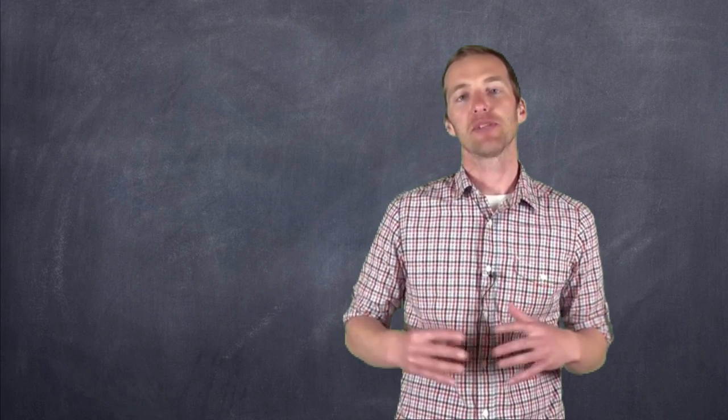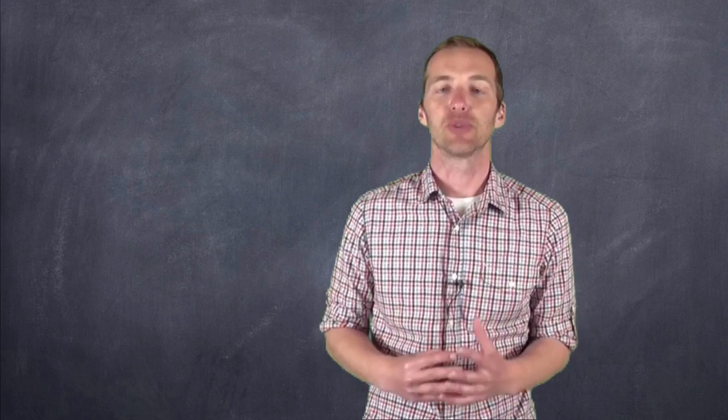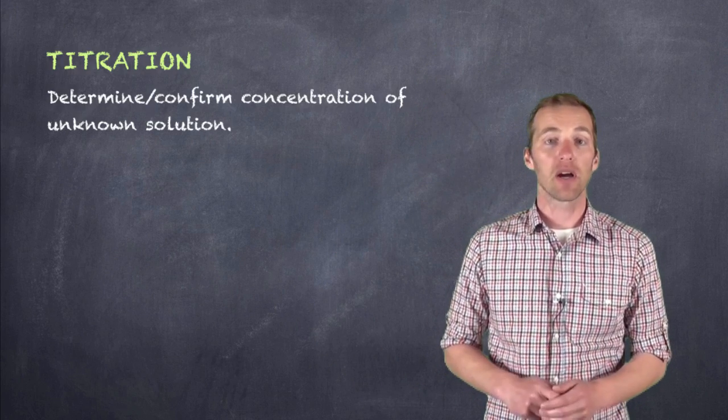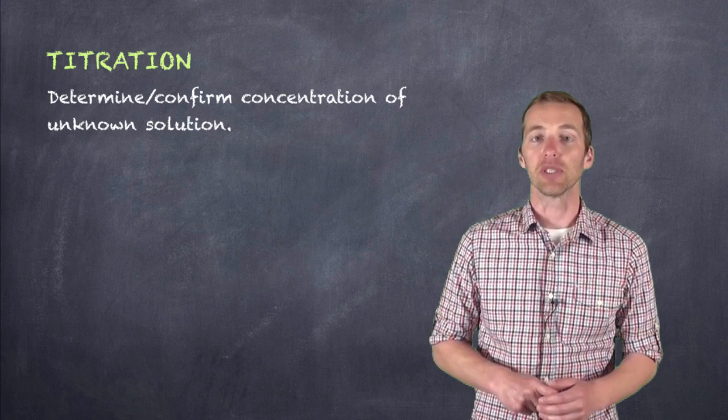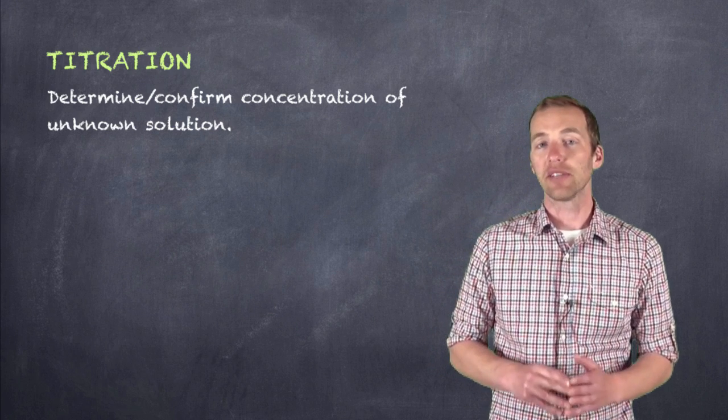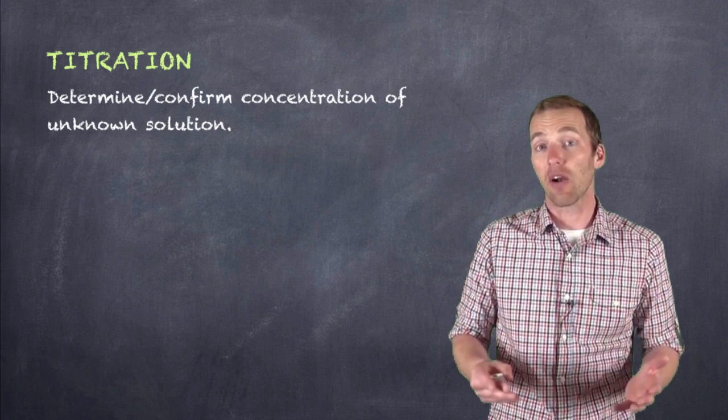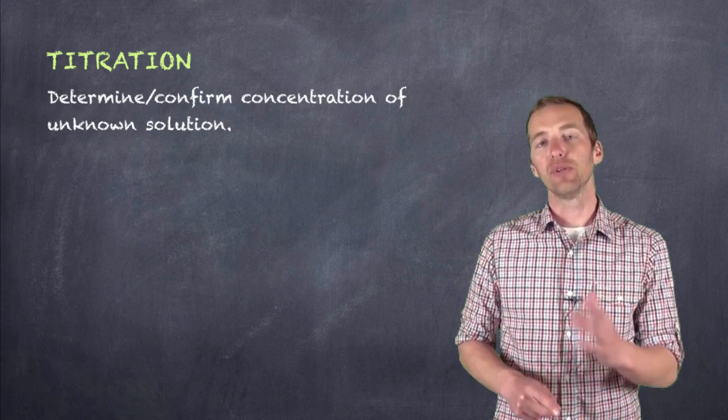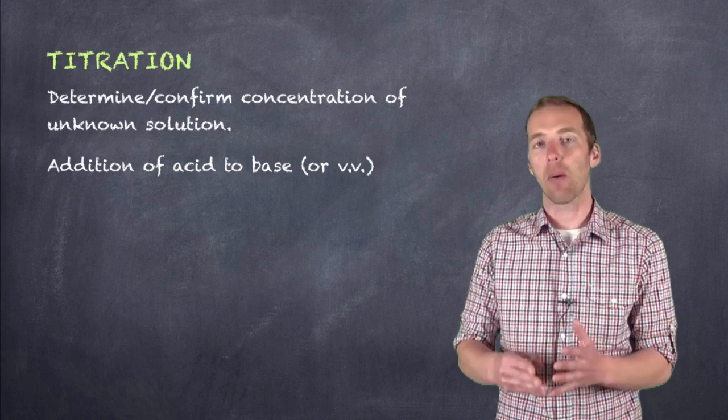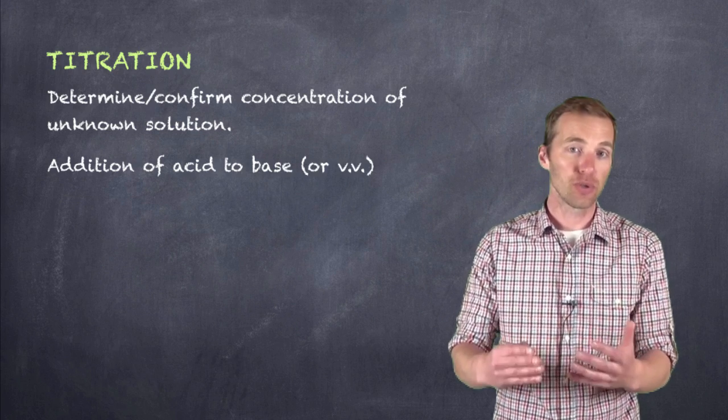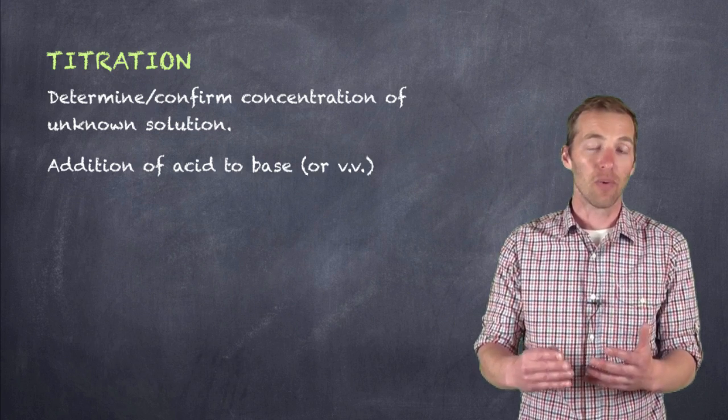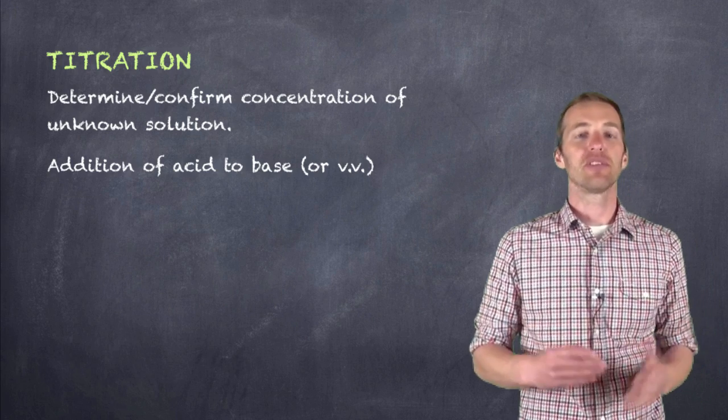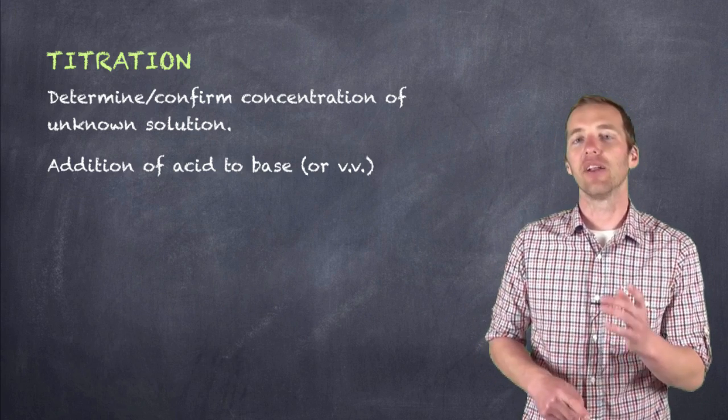Well, there's a process in chemistry that we refer to as a titration, and what a titration allows us to do is to determine or confirm the concentration of an unknown solution. And we use a neutralization process to do this. So let's say our unknown is an acid, like, oh I don't know, acetic acid, the kind that's found in vinegar. We would neutralize it with a base and see how much base it took to neutralize the acid. And what that does is it allows us to use our friend stoichiometry in order to figure out the concentration of that unknown solution.